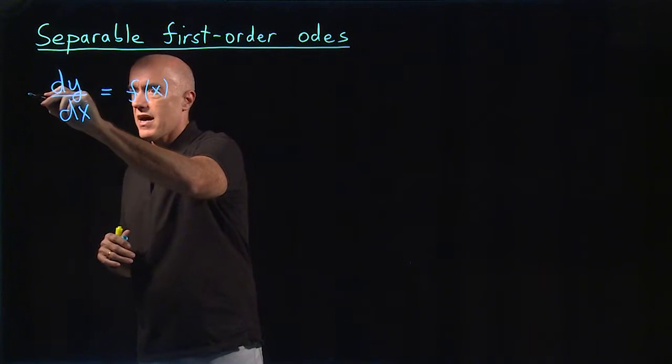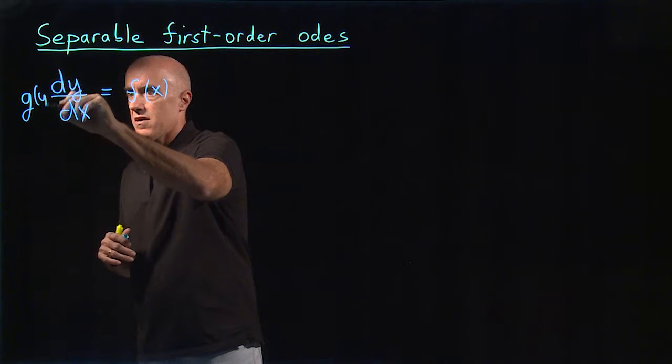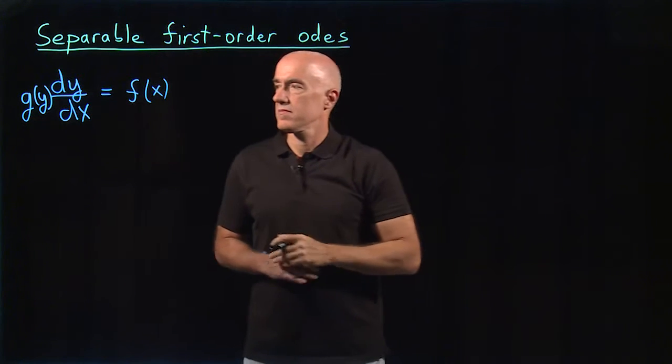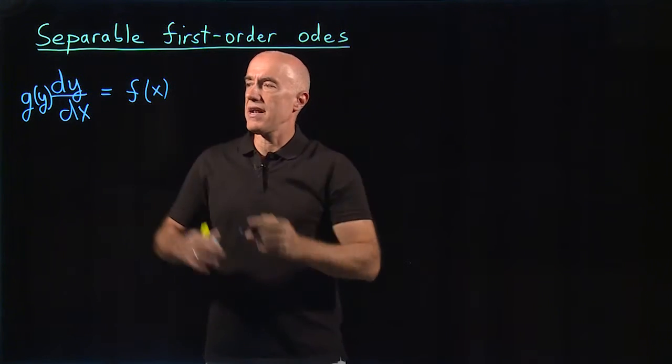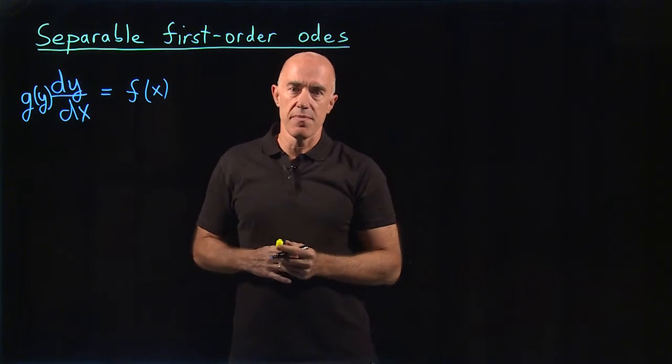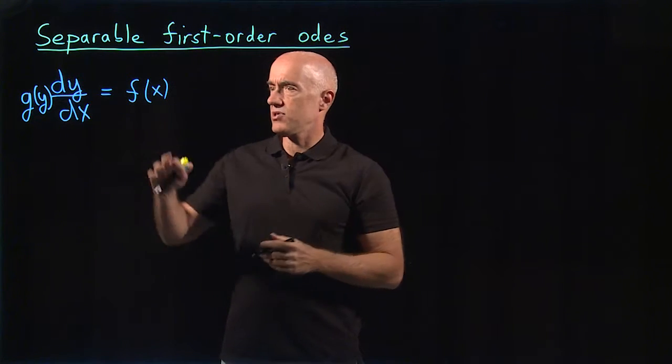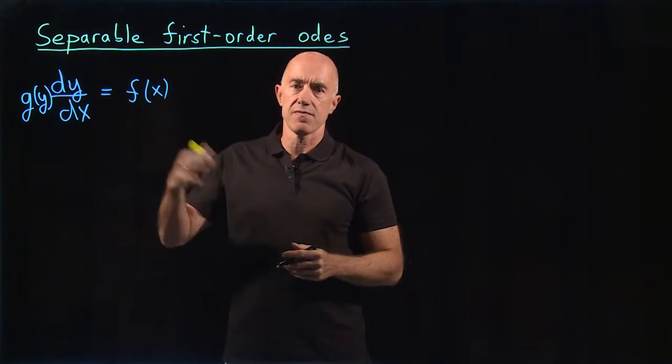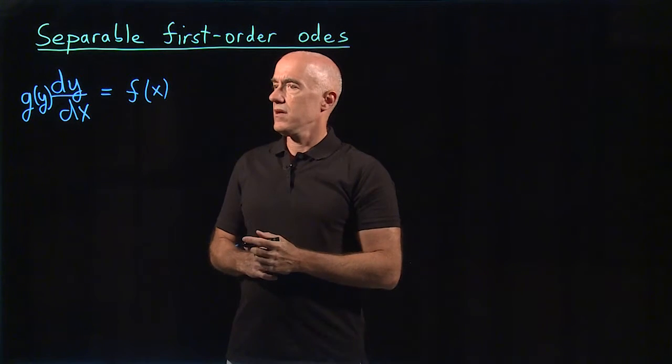and then on the left-hand side we'll have a g of y. So basically the right-hand side is f of x divided by g of y, or you can say that it's just some function of x times some function of y.